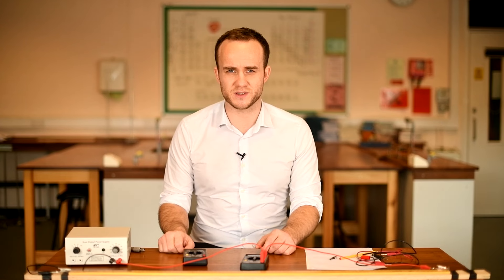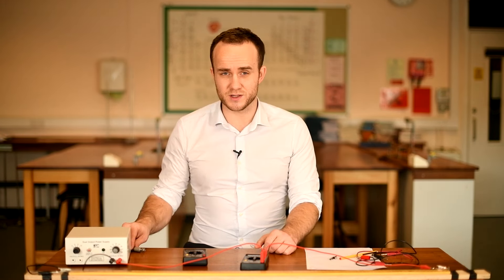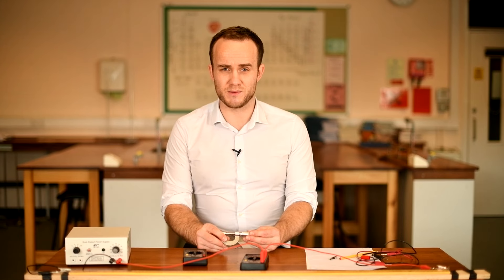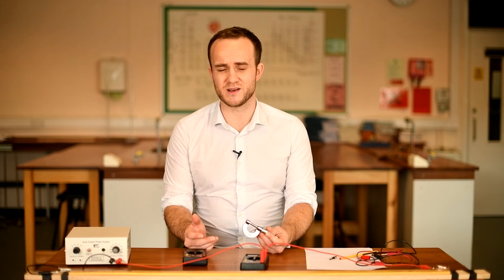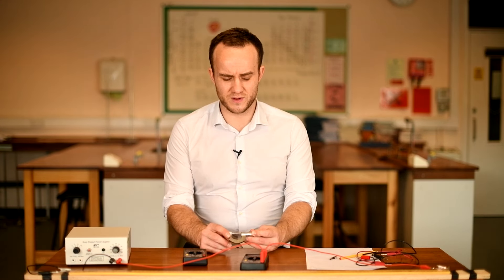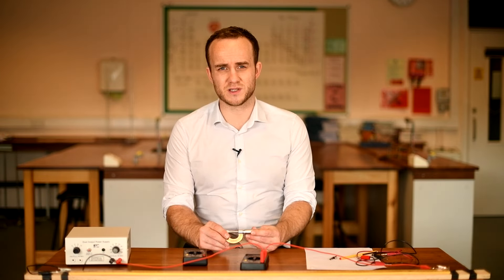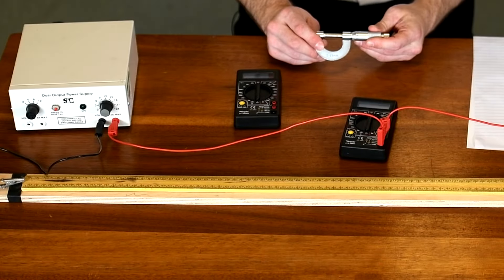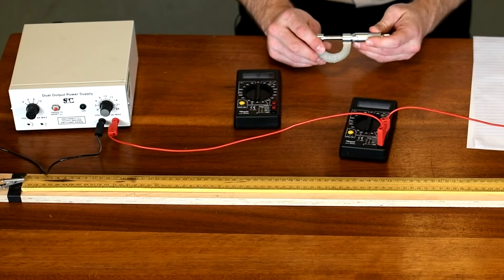The first thing we need to do is measure the diameter of the wire because we need to calculate the cross-sectional area, and so I'm going to be using a micrometer. We don't want to use a ruler because the resolution of that is going to be a millimeter and so it's not going to be good enough. Vernier caliper, again tenths of millimeters still not great. This however has a resolution of 0.01 millimeters, so a hundredth of a millimeter, far more precise, that's what we want.